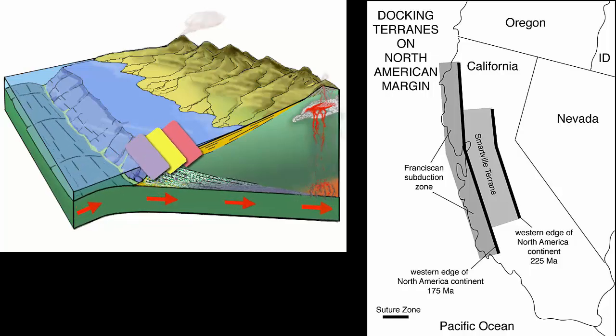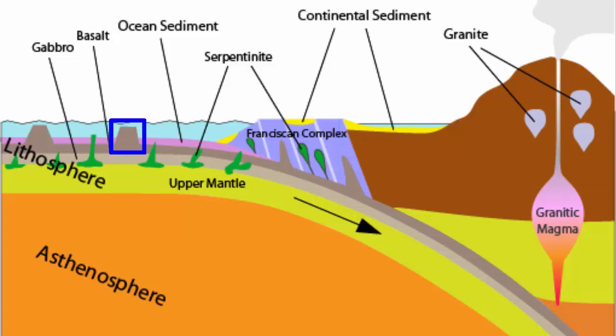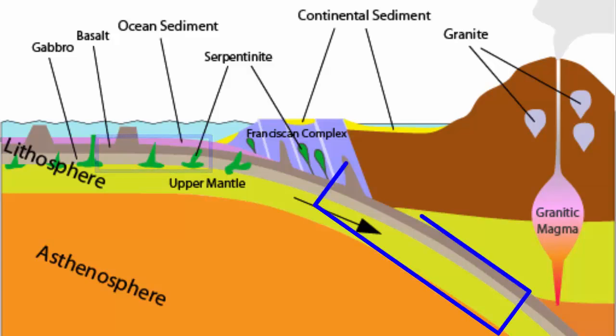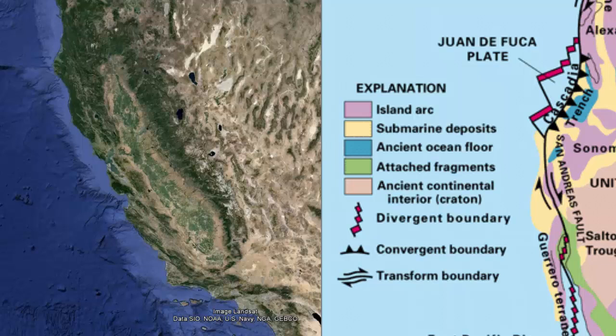Accreted material can include ocean sediment scraped off the top of the subducting plate, continental sediment that poured off the continental shelf into the trench, ocean seamounts or islands that got stuck in the trench and scraped off, sections of entire oceanic crust, and metamorphic rocks produced during collision and subduction. Plate tectonics has had a huge impact on the past and present landscape of California, producing many of our major geologic hazards and rafting together the very land masses that now make up our state.